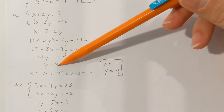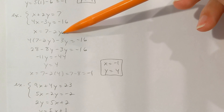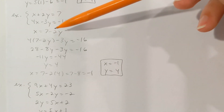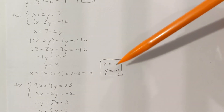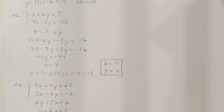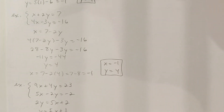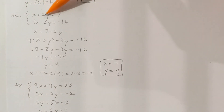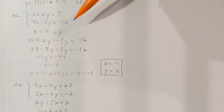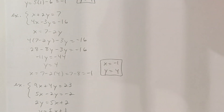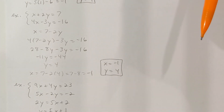Knowing that y is 4, substitute into the substitution equation: 7 − 8 = −1, so x = −1 and y = 4. The nice thing about working with a system is you'll always know if you have the right answer — you can check once you've got your values. Is it true that −1 + 8 = 7? Yes. And is it true that −4 − 12 = −16? Yes. Both equations are satisfied, so this is the correct answer.